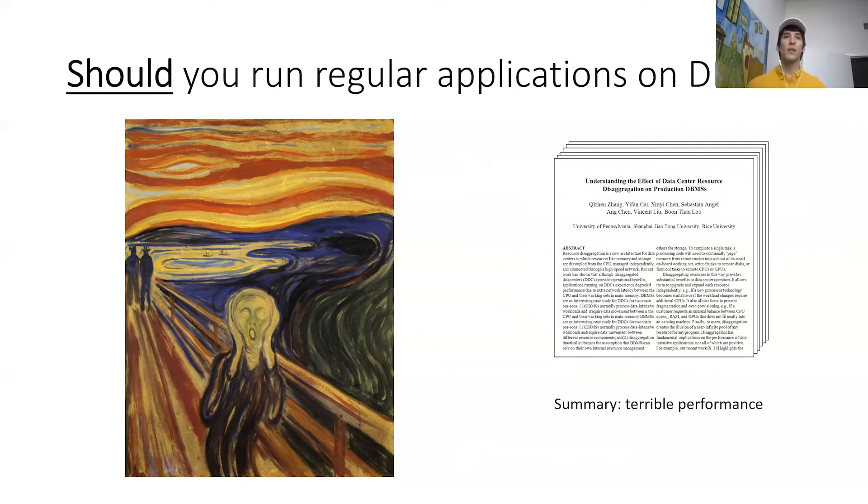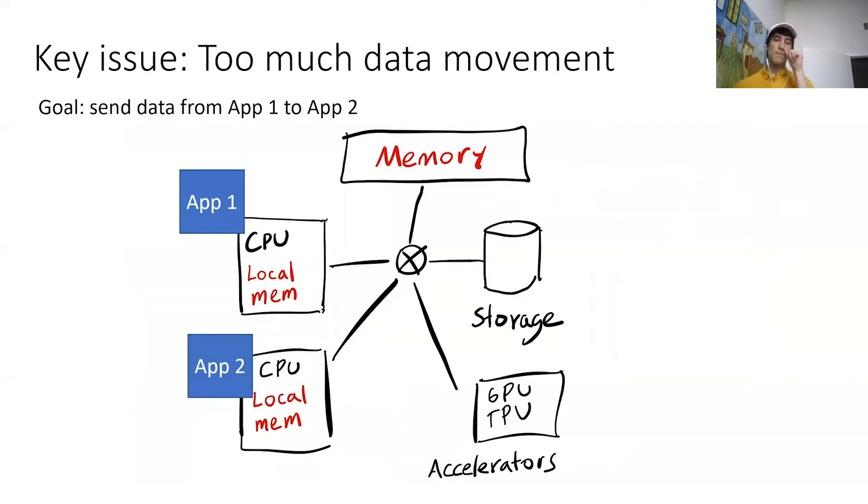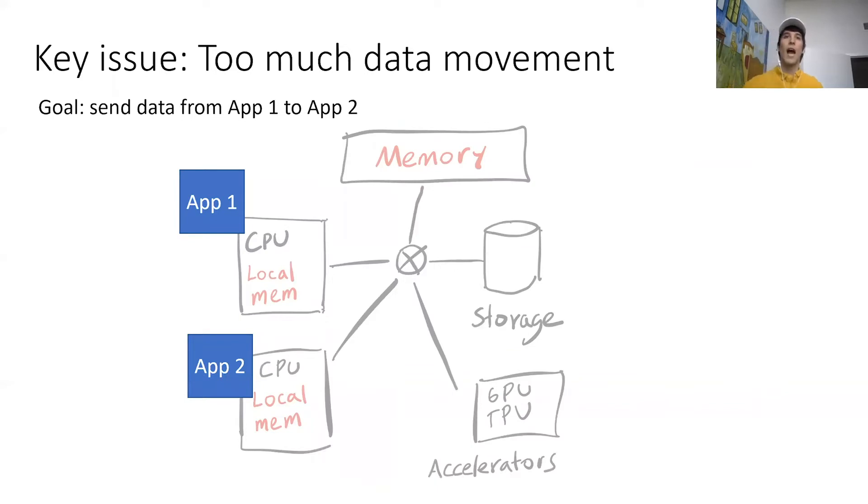One reason for this degradation is that even though we have a local memory cache, many of the loads and stores end up going to remote memory anyway. To demonstrate this, consider the following example: we have two applications, app1 and app2, running on two different servers, and app1 wants to send some data to app2. To accomplish this, app1 needs to load the data from its remote memory to its local memory, and then it needs to send the data over the network to the other application.